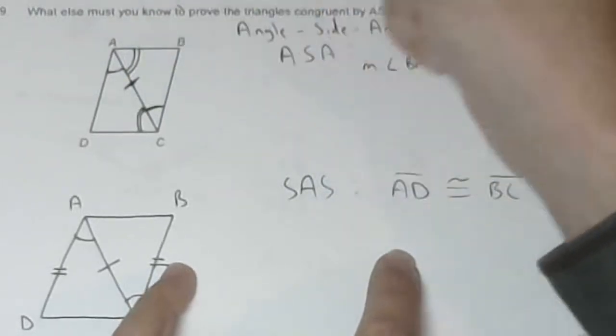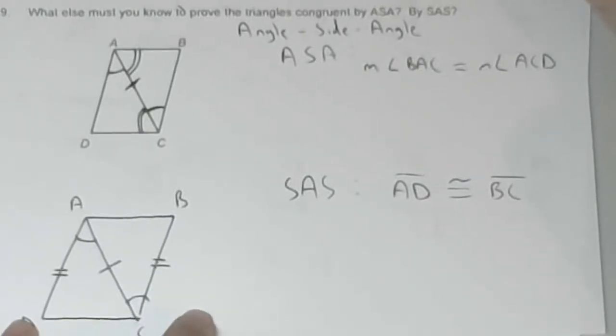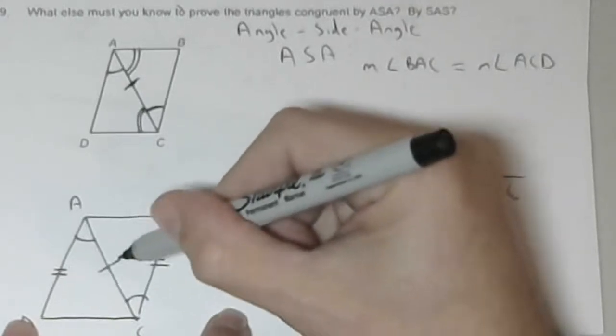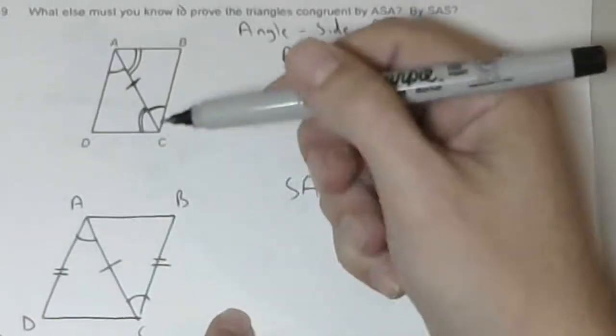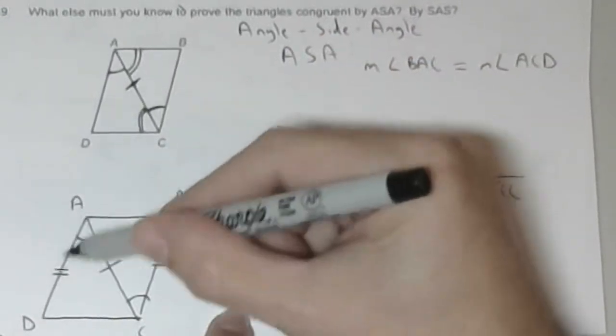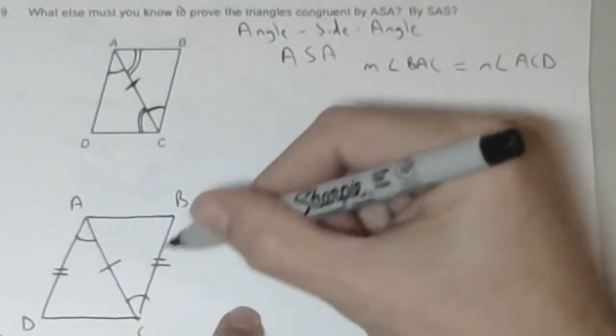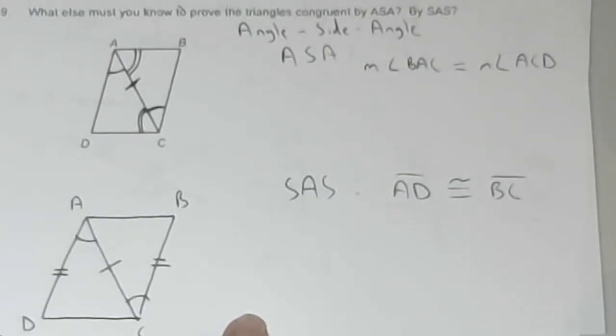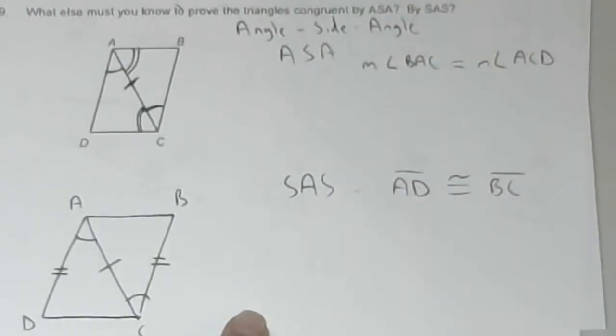Angle, side, angle. Then I just redrew the same figure by SAS, and I had the same two angles here, and this side, shared side AC. If I know segment AD is congruent to segment CB, then I can prove that those two triangles are congruent by side angle side.